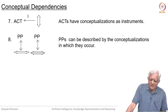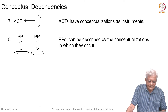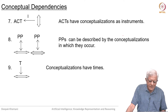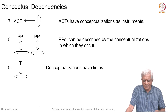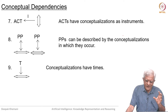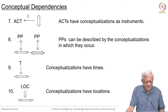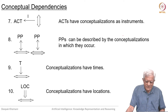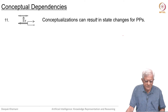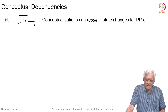Picture producers can be described by conceptualizations in which they occur, and we will see examples of this. Conceptualizations can have times — we can say this event happened at this time — and they can also have locations.